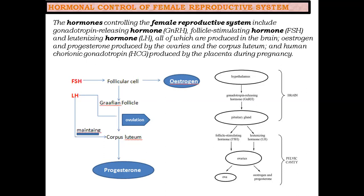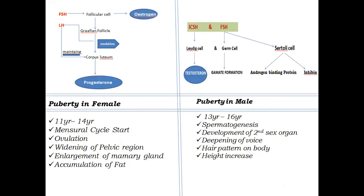In hormonal control of the reproductive system, basically what happens is: the hypothalamus signals and secretes Gonadotrophin Releasing Hormone (GnRH). This signals the pituitary gland to secrete FSH and LH — the Follicle Stimulating Hormone and Luteinizing Hormone. These act on the ovaries to produce progesterone and estrogen, and LH is the main hormone that helps with ovulation.